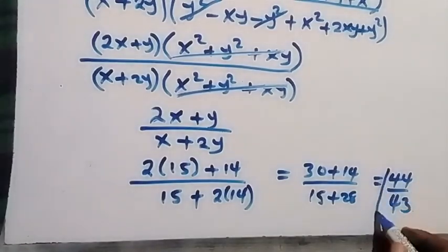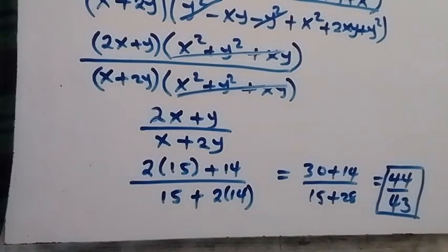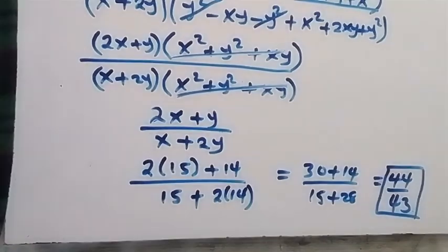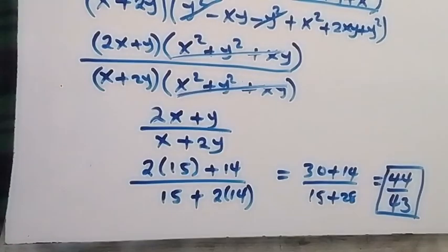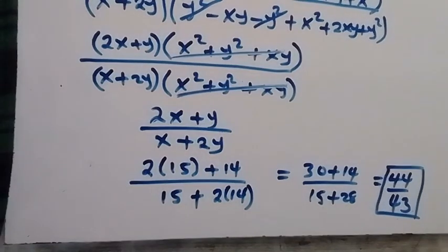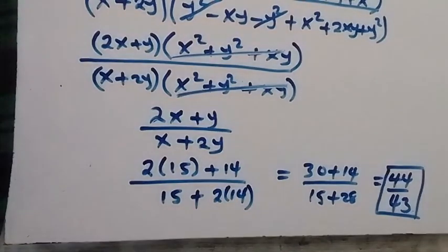So the simplified form of what we are given is 44 over 43. Thank you for watching — please share this video, subscribe to this channel for more exciting videos, give comments, and maximum reaction. Thank you, see you next class, bye for now.